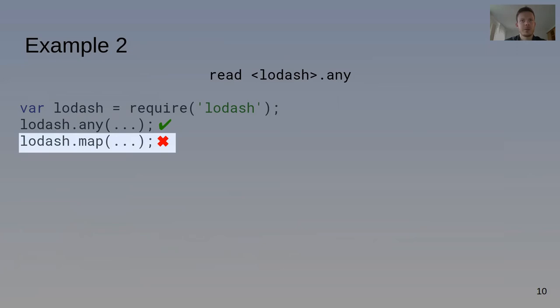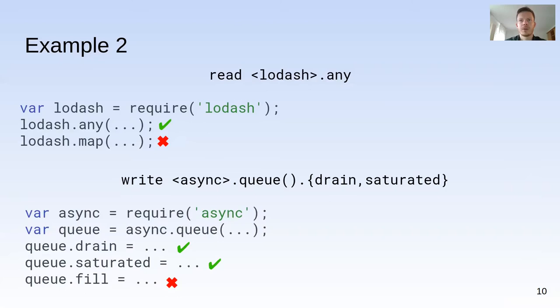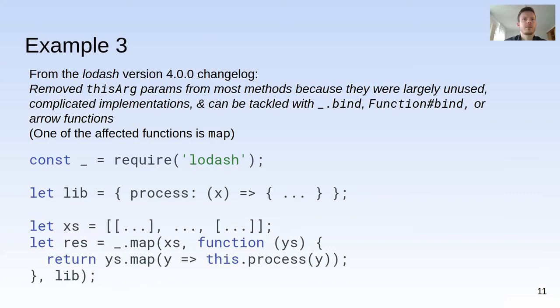This write pattern matches writes to both the drain and the saturated property of objects returned from the queue function of async, but not writes to other properties such as the fill property. As an example requiring a call pattern, consider this breaking change from the lodash version 4 changelog: it says that the disarc param is removed from most methods since it was largely unused in practice. The actual list of affected functions is not specified, making it extra hard for application developers to determine if the breaking change affects their application.